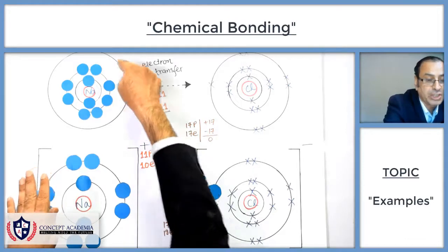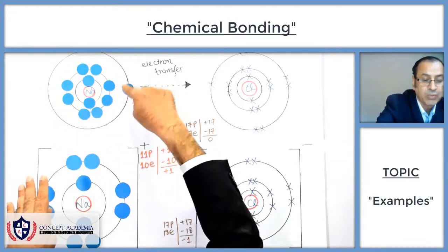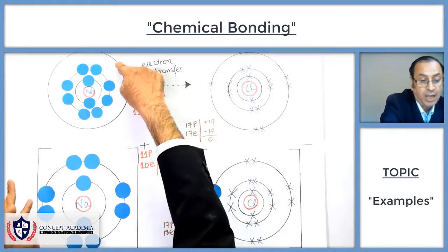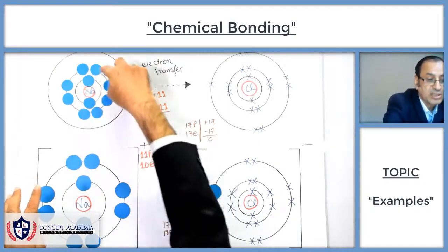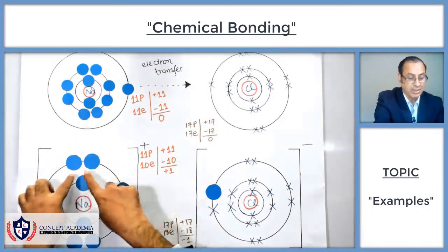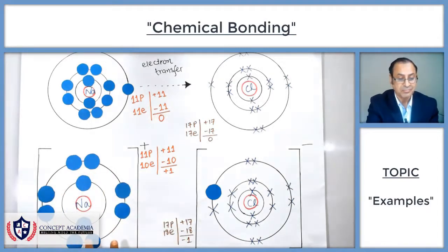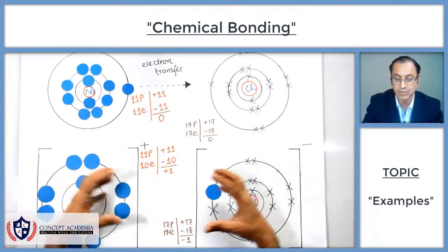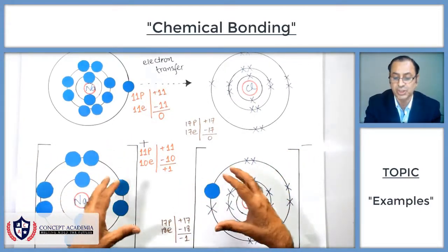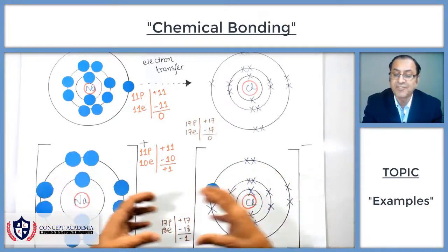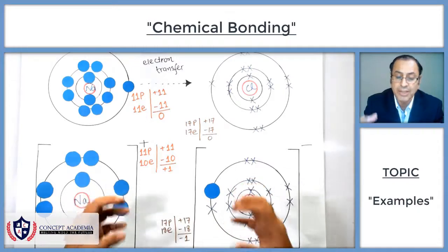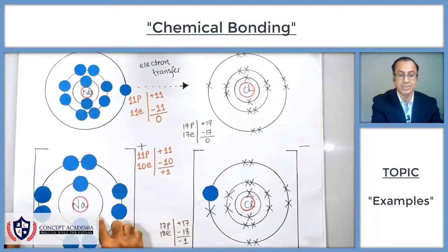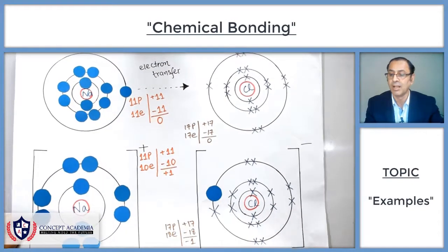Sodium, with the loss of one electron, becomes a positive ion. Since sodium had just one electron in its last shell, losing it leaves an empty shell — we never show an empty shell, so the second shell becomes the last shell shown. The positive sodium ion and negative chlorine ion attract each other, and that force of attraction is the ionic bonding between them.